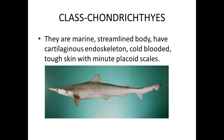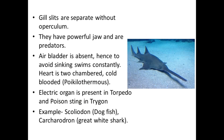They have tough skin with minute placoid scales all over the body. Gill slits are separate without operculum — operculum means the gill covering. They have powerful jaws and are predators — it includes sharks. The air bladder is absent, so to avoid sinking they swim constantly.